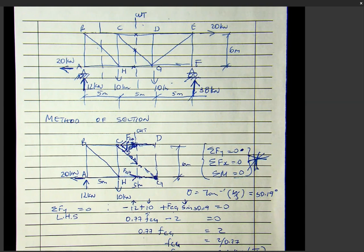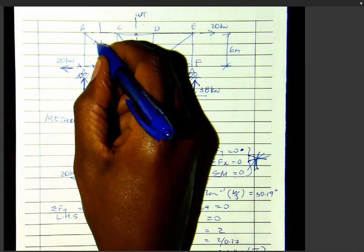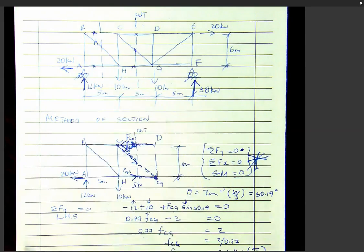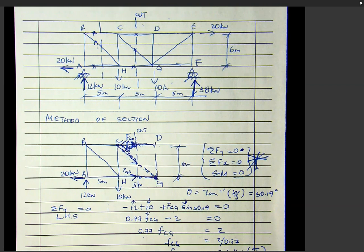I'm going to give you the answers for these members using the resolution of joints method. You should calculate those same numbers using method of section — you should get the same answer.